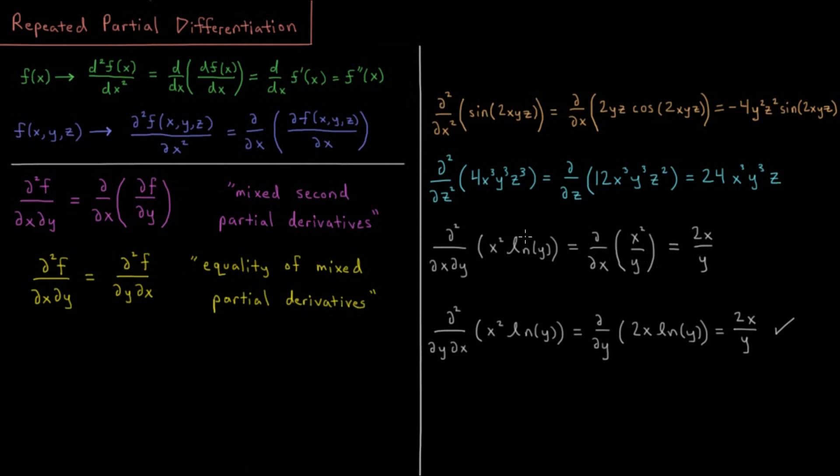So what we should see is we should get the same result, even if we reverse the order of the derivatives that we took. So let's first take the derivative with respect to x, x² log y. We're going to get the derivative of x² is 2x, log y being a constant, 2x times log y.